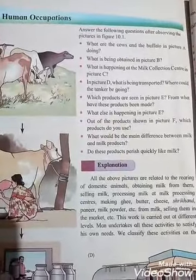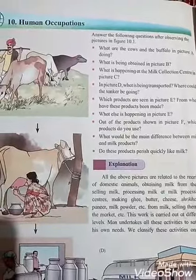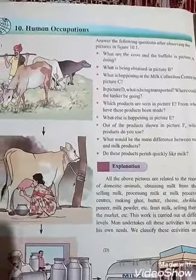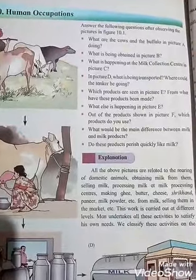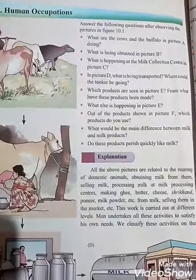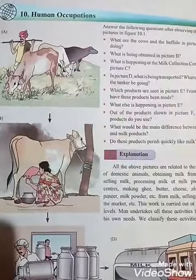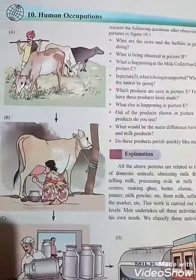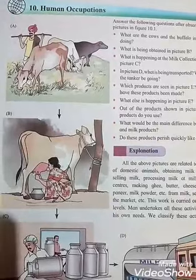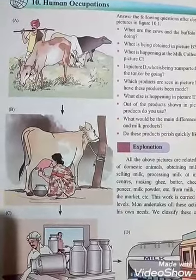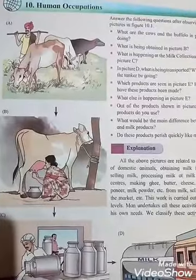Answer the following questions after observing the picture in Figure 10.1. There are many questions. You have to observe the figure and write the answers. First, what are the cow and buffalo in Picture A doing? The cow and buffalo are grazing in the pasture — that is, land covered with grass and other low plants.